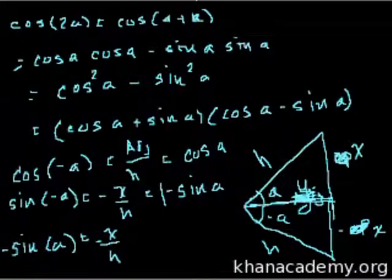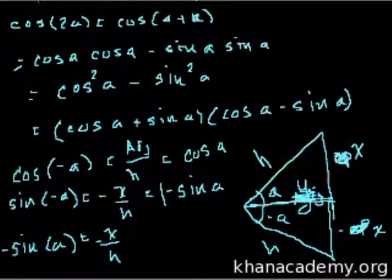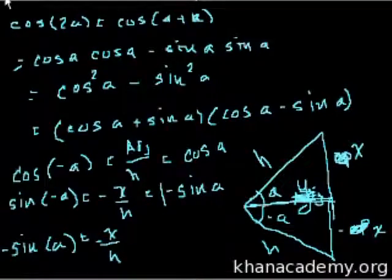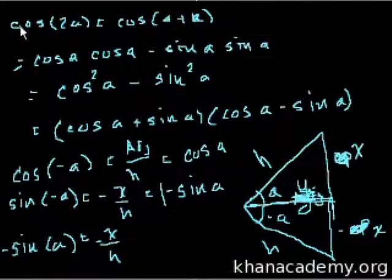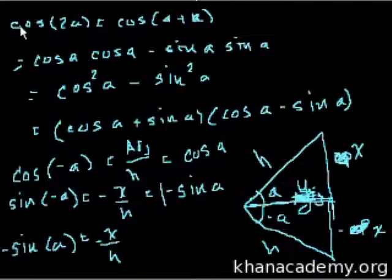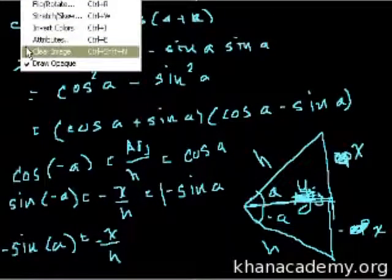These are angle identities. Trigonometric functions - when sine is negative, sine of negative P is an odd function. Let me show you another identity. This is an identity in trigonometry. Sign of a plus pi over 2.